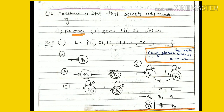In the previous video, we constructed a DFA that accepts an even number of 1s, 0s, A's and B's. Now we are looking at a question in which we have to design a DFA which accepts an odd number of 1s, 0s, A's and B's — specifically odd number of 1s, odd number of 0s, odd number of A's, and odd number of B's.